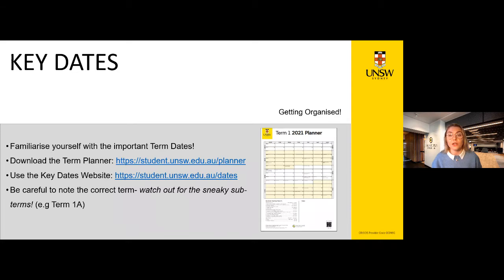Throughout the term there are a number of useful dates you should make sure you're across. The university is strict when it comes to deadlines and there's rarely space for flexibility, so the onus is on you to be aware of upcoming deadlines. The good news is that we send out reminders via email, but it is best to keep across these dates yourself in case you miss any emails.